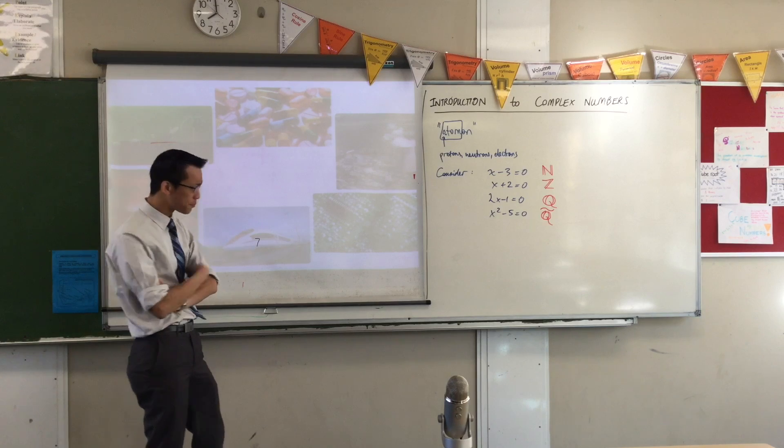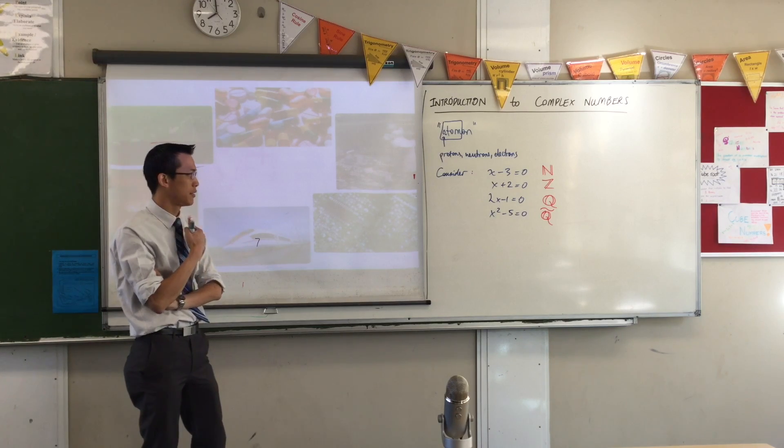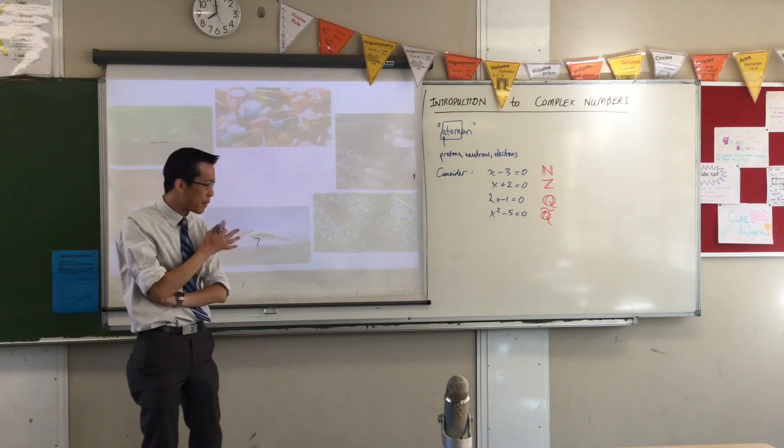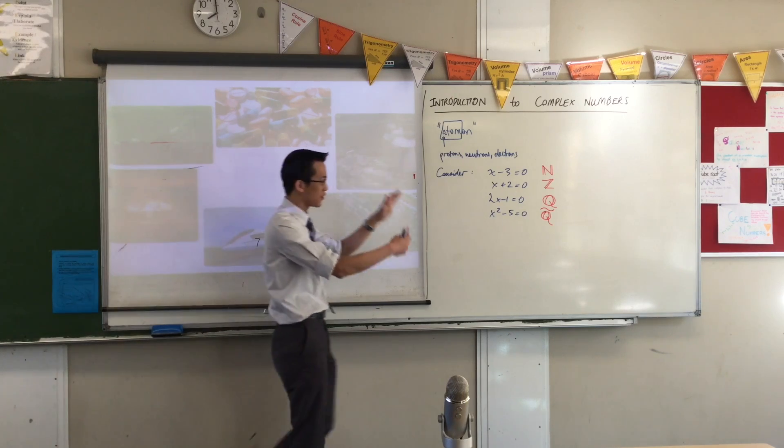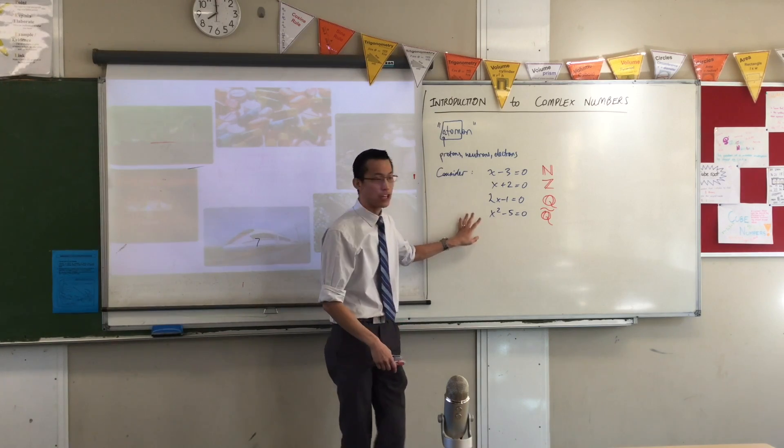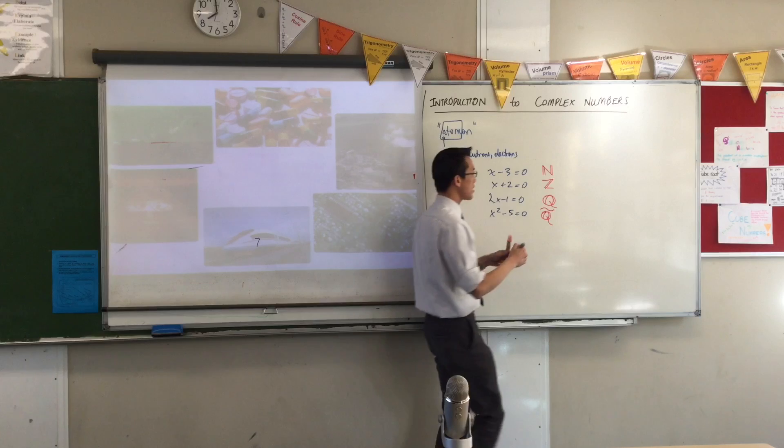Now to say something is not rational, we put a funky line, a curved line over the Q which indicates rational. So that means irrational. These are all of the numbers, basically all the big families of numbers with one exception that you guys know about.